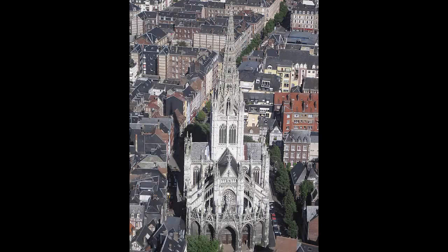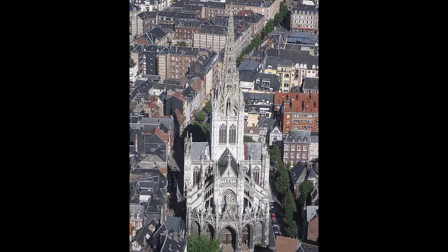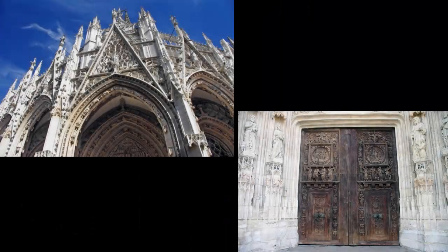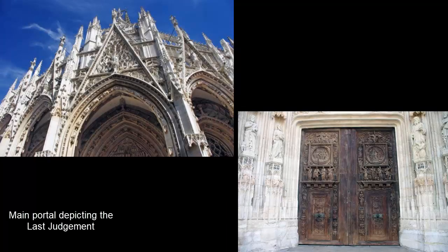Looking at the Flamboyant style — it started around 1350 to 1550. The name comes from the French word flambe, meaning flame, as the curving ornate lines of edifices were thought to resemble flames. It emphasized even greater decorative effects by employing more curved shapes. A great example is the western facade of the church of Saint-Maclou in Rouen, including the main portal depicting the Last Judgment.